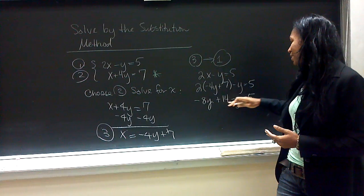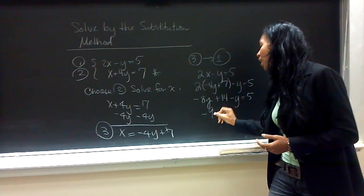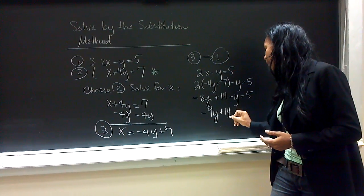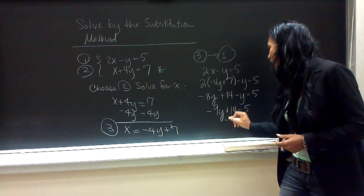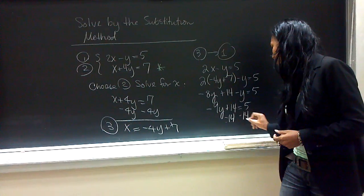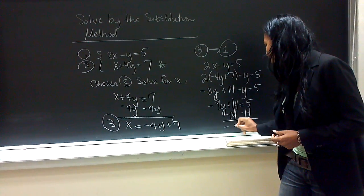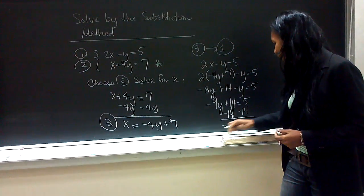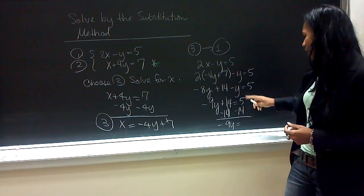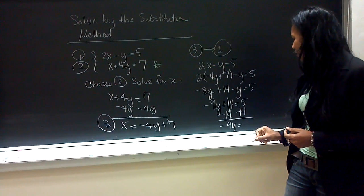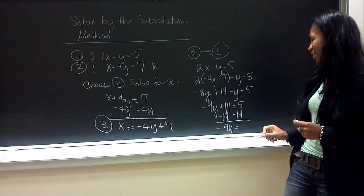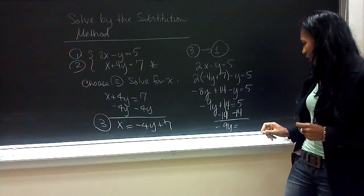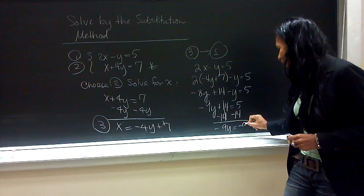The negative 8y minus the y gives us negative 9y plus 14 is equal to 5. We subtract 14 from both sides. And we see that negative 9y gives us this result, which is 5 minus 14 gives us negative 9.